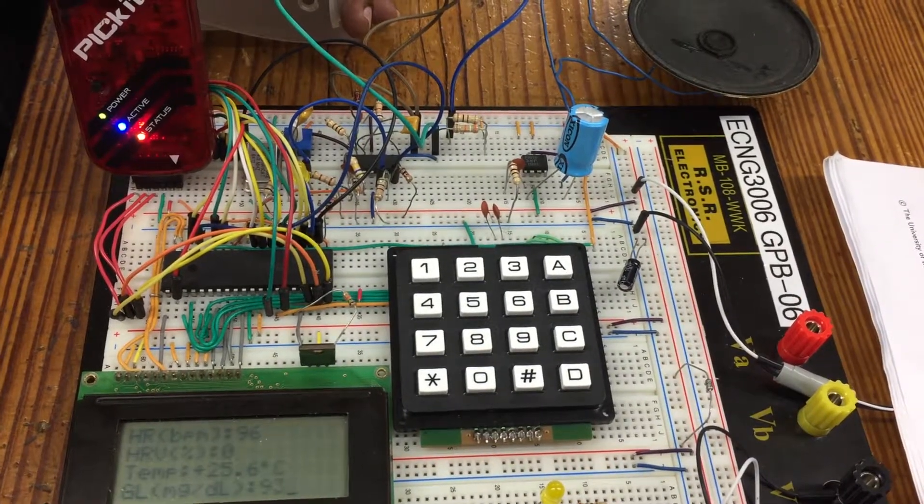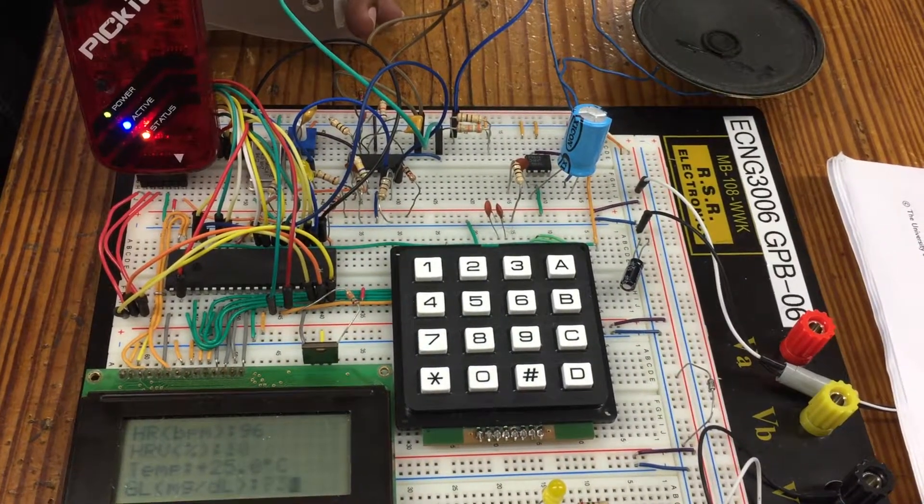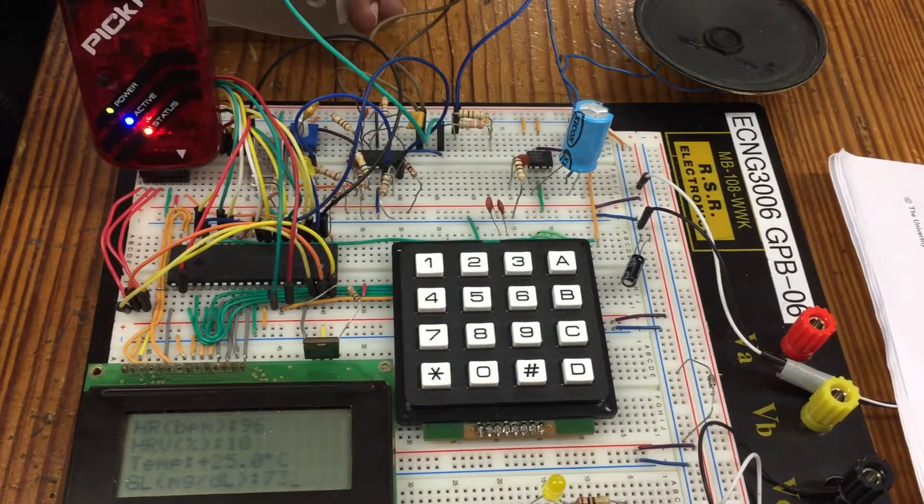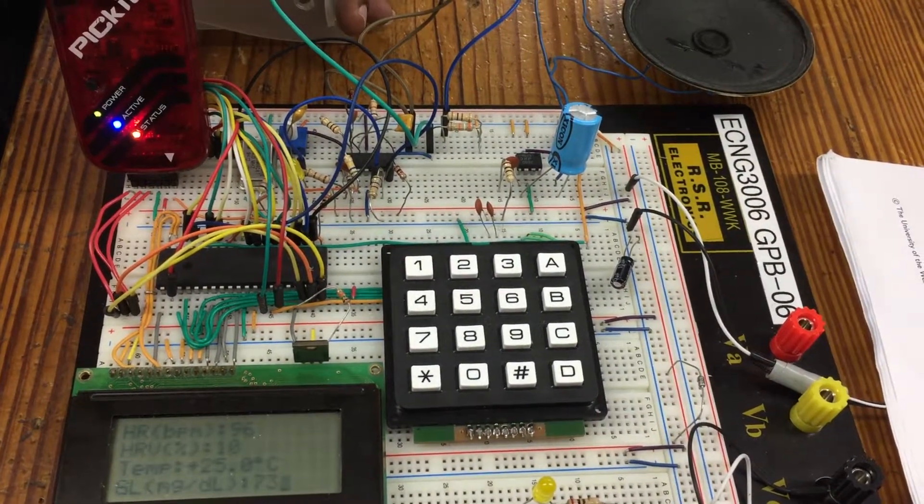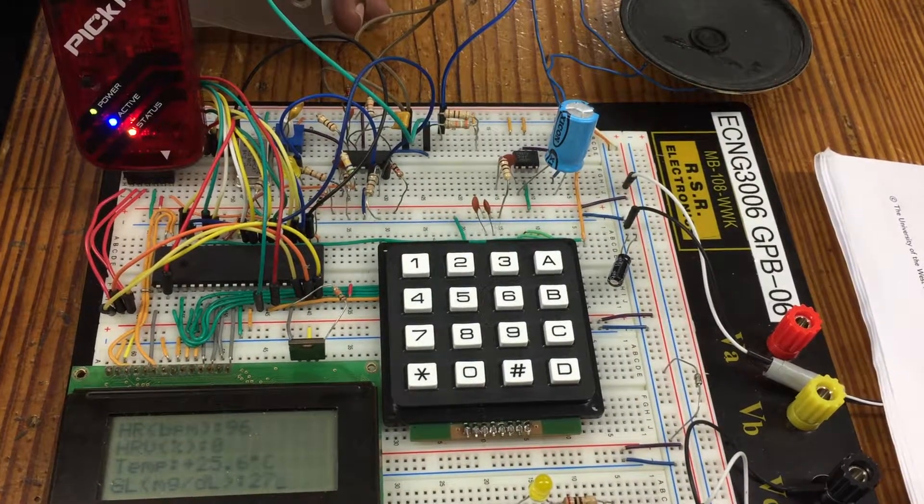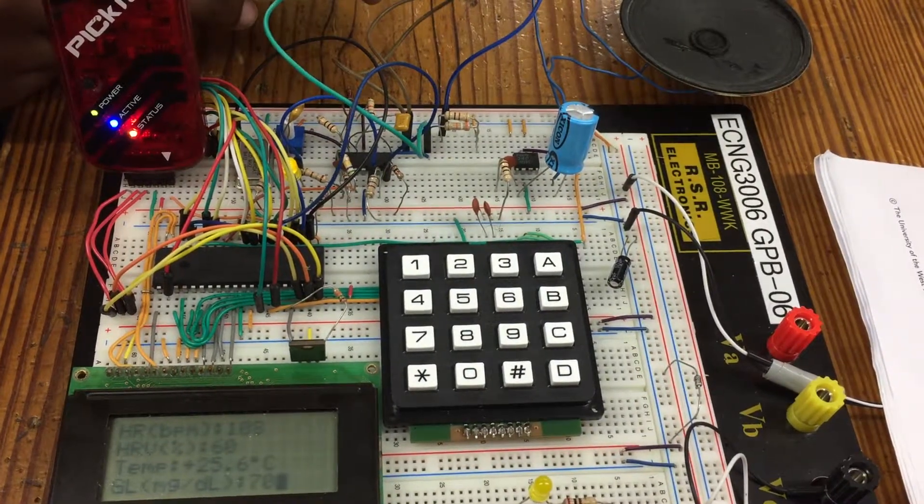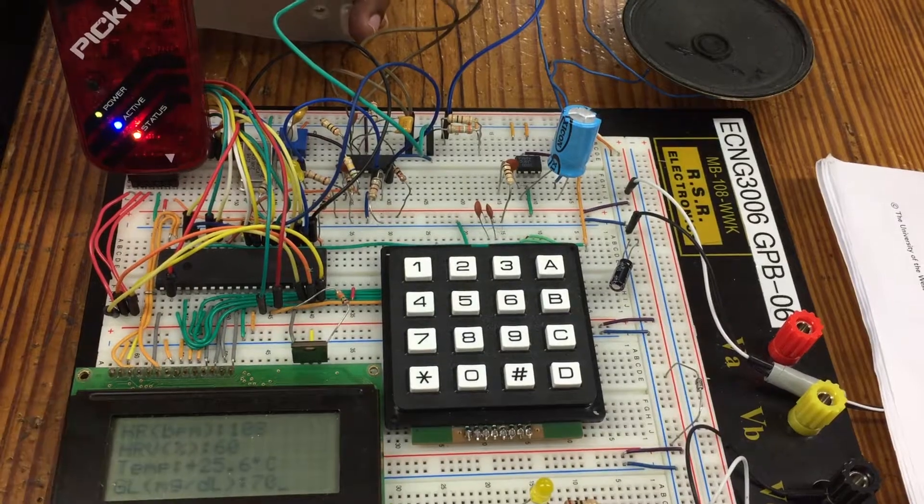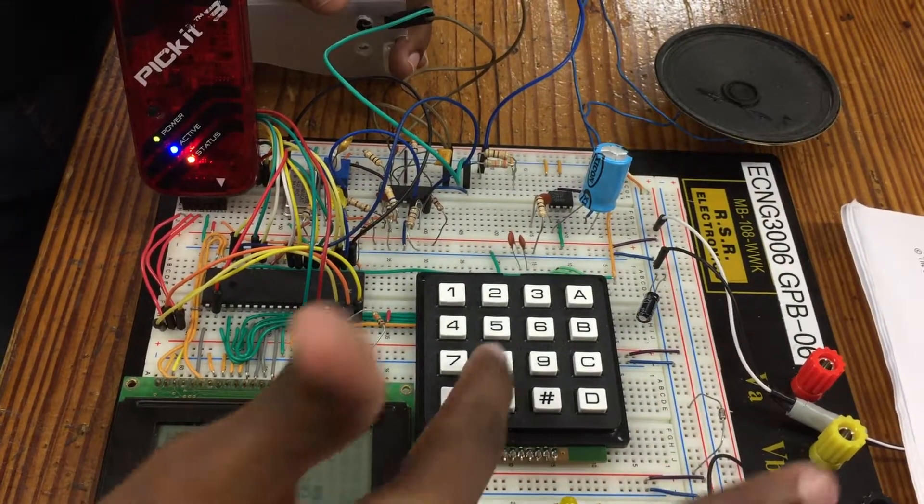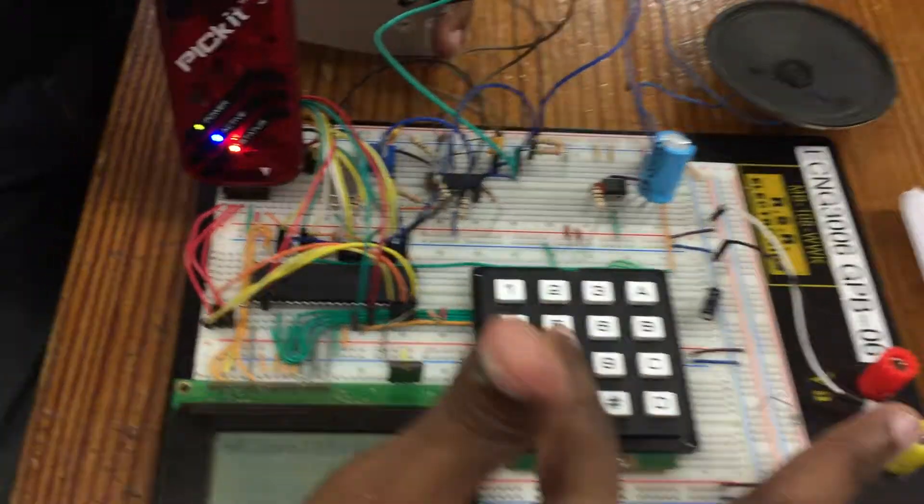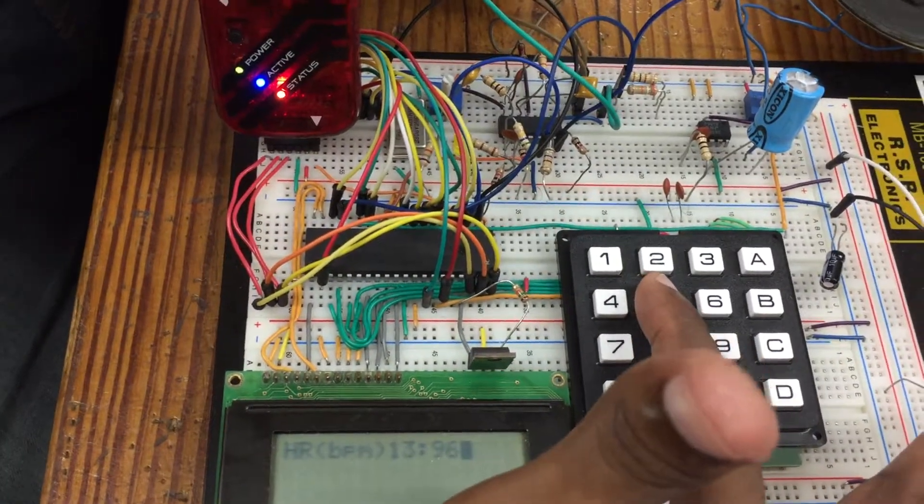So we have 96 now. 96 again. 96. If I move my finger, I can see that it's constantly taking accurate values. So if I scroll back to the memory now, you should see some values being skipped.